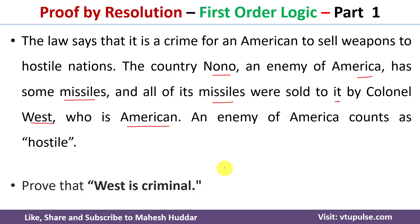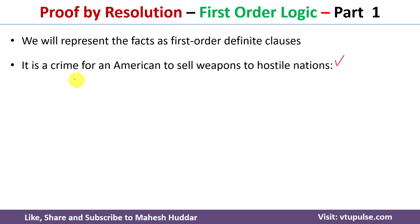Given these statements, what we need to prove is that West is a criminal. We will take one statement at a time and convert each into first order logic, then use proof by resolution. The first statement is: it is a crime for an American to sell weapons to hostile nations. To convert this, we need predicate symbols: Criminal, American, Sells, Weapons, and Hostile.